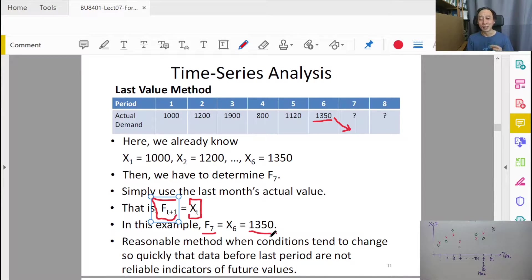We say that in time 6, present now, before time 7 arrives. So this is how we do it. That's it. Very simple. Last value. Just copy the last data and say that it is our forecast for the immediate future, F_7.